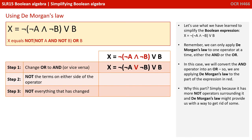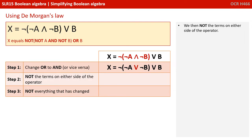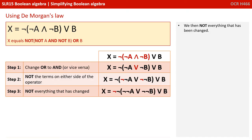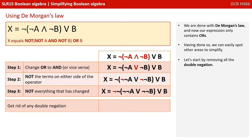So let's use what we've learned to simplify the Boolean expression X equals NOT(NOT A AND NOT B) OR B. Remember, we can only apply De Morgan's law to one operator at a time — either the AND or the OR. In this case, we're going to convert the AND operator into an OR. So we're applying De Morgan's law to the part of the expression shown in red. Simply because it has more NOT operators surrounding it, and we are hoping that De Morgan's law might provide us some way to get rid of them. Having picked our term, the AND symbol, and turned it into an OR, we move on to step two and we NOT the terms on either side of the operator. We then NOT everything that has been changed. We're done with De Morgan's law, and now our expression contains ORs.